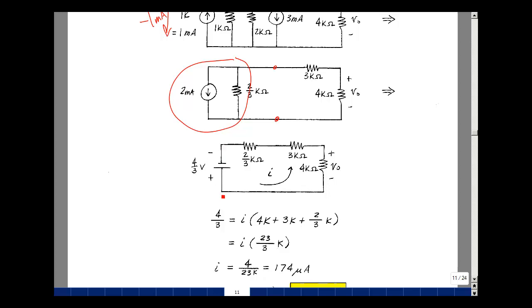So let's go around the loop. The rise in voltage is 4/3. The drop is going to be i times 4k, i times 3k, and then i times 2/3 k. Pull out the i. Have a common 3 here, so I'd have 12 divided by 3, 9 divided by 3, and then 2 divided by 3. And that adds up to 23 divided by 3.